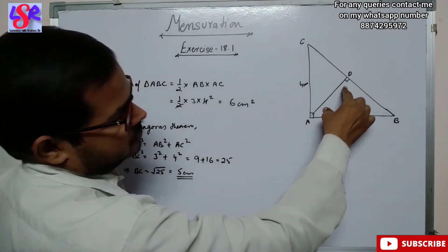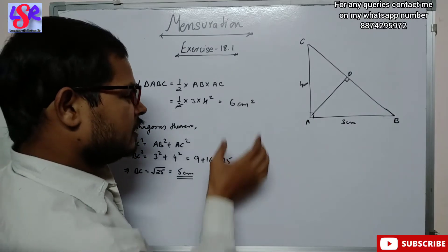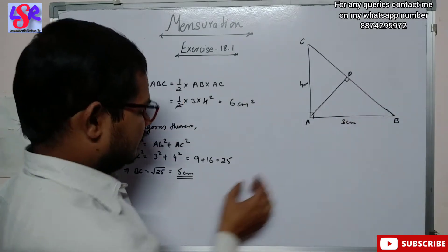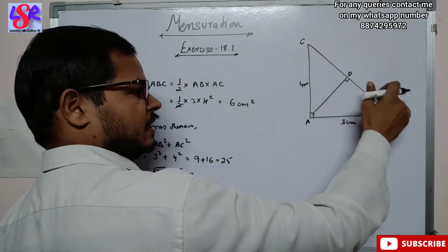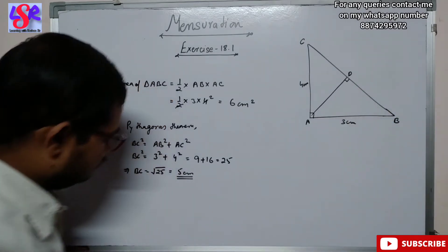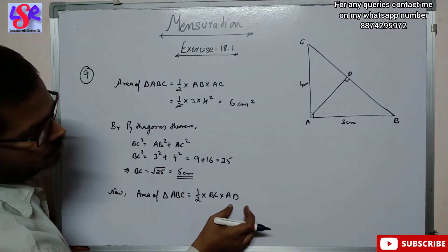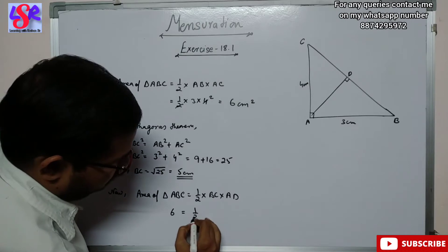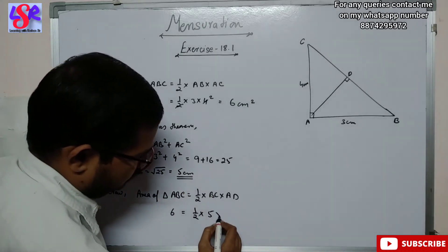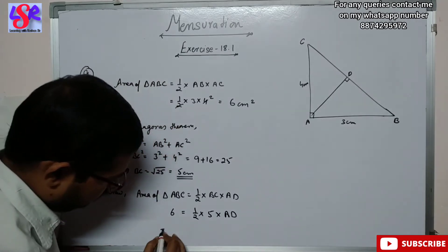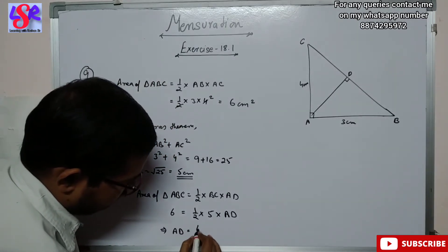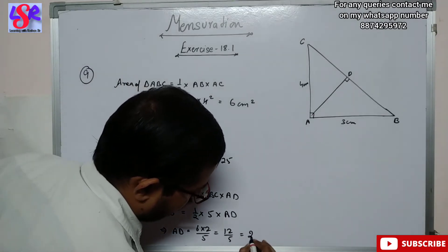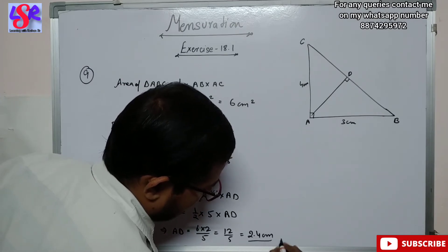Now we have to find the altitude AD corresponding to base BC. We know the area of the triangle is 6 centimeter square and BC equals 5 centimeter. Using area of triangle ABC equals 1/2 into BC into AD, we get 6 equals 1/2 into 5 into AD. Therefore AD equals 6 into 2 upon 5, which is 12/5, equals 2.4 centimeter.